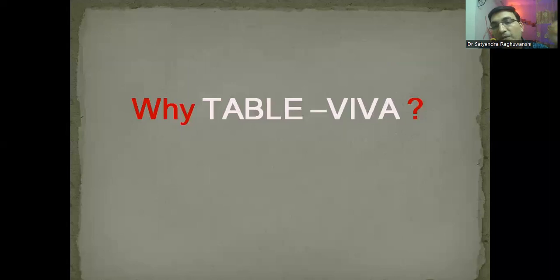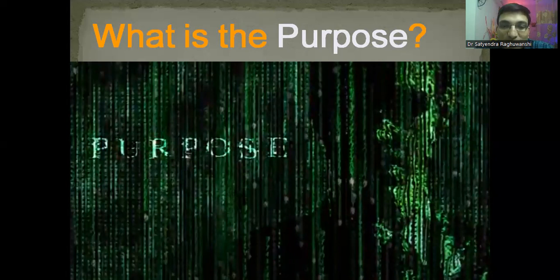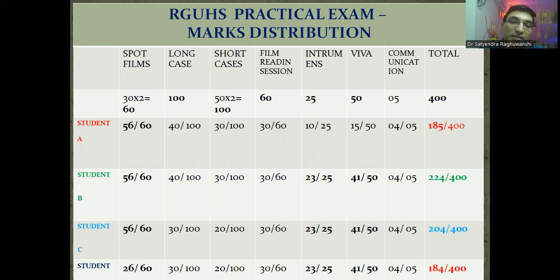Firstly, we need to know why we should learn about table viva. What is the need? What is the purpose? As Agent Smith in the famous movie Matrix would say, what is the purpose? Let's take a few scenarios, especially for our final radiology examinations. This is a standard scorecard in the RGVHS university examination, where the total marks in the practicals are 400.